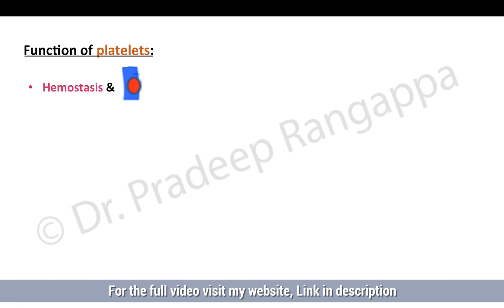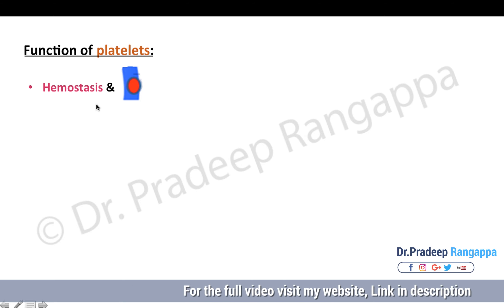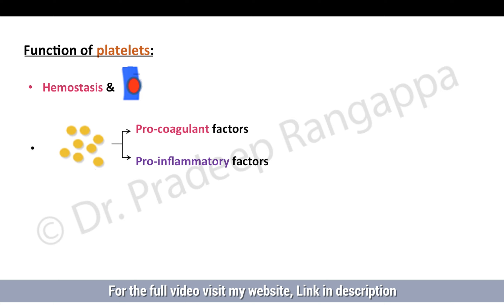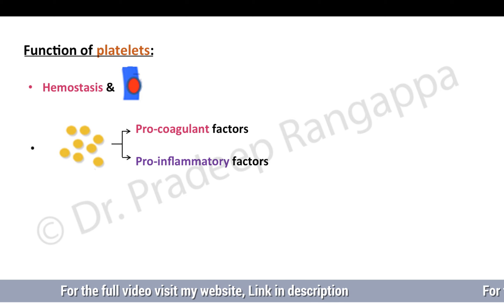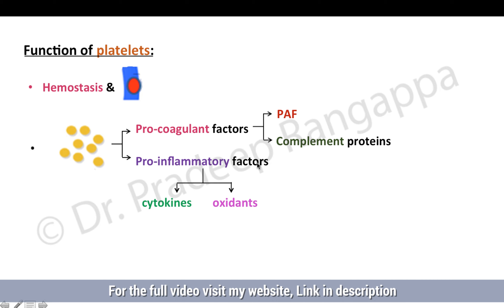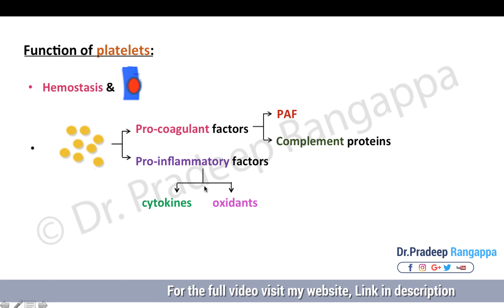When you look at the function of platelets, it predominantly has two functions: hemostasis, which is to stop bleeding, and a prothrombotic state — it can create thrombosis in major blood vessels including veins and arteries. Beyond hemostasis and prothrombotic effects, platelets also produce procoagulant factors and proinflammatory factors. Some procoagulant factors include platelet activating factors and complement proteins, while proinflammatory factors include cytokines and oxidants.